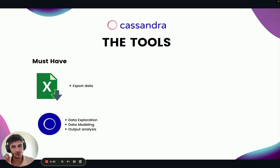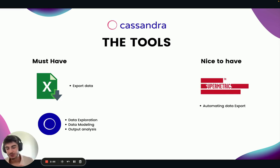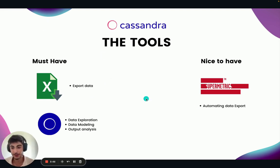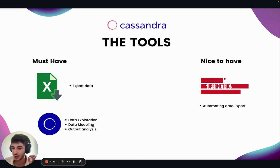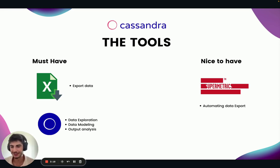Now let's see what are the tools that are nice to have — like, for example, Supermetrics. It's super useful to automate data exports from your marketing data sources and centralize everything into Excel. It's an add-on. In Cassandra, for the free feature, you also have API connectors that you can use. But today I want to dive in in a really free and easy way in which you can start. Then if you want to improve it, there are always paid plans that we can opt into.